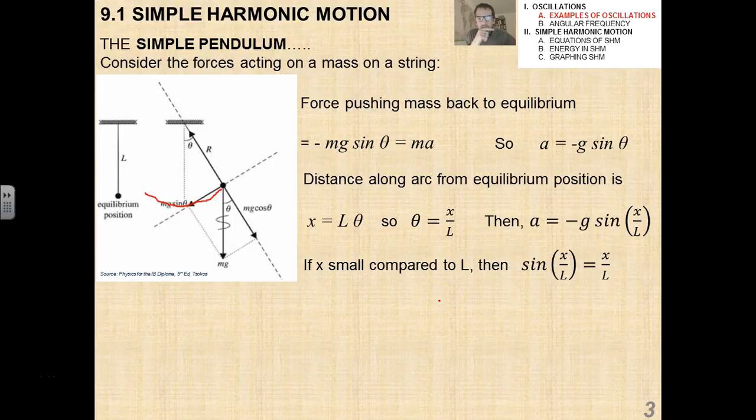Now, we're going to use that small angle approximation here again, and this is why when we talked about pendulums before and the pendulum equation, this is why we said that the pendulum equation only holds for small initial angles from the equilibrium or from the vertical. It's because we have to use a small angle approximation. If x is small compared to L, in other words, if that little arc length is small compared to L, then the sine of x over L is equal to x over L, as we've seen before in class. So, now we have that a equals negative gx over L, or in other words, a equals negative ω² x. Now, this negative ω², I'm going to talk a little bit more about where that comes from. This will be integral in terms of determining, dealing with the equations of motion, sorry, the equations of simple harmonic motion.